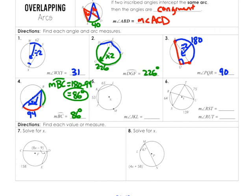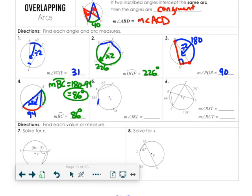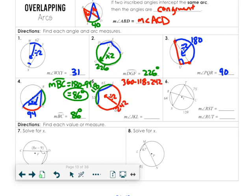Number 5: they're asking for angle JKL. That angle cuts off this arc. I need to figure out that arc, then divide by 2. I add the two given arcs: 53 and 65 together make 118. The red arc is 360 minus 118, which is 242. Then 242 divided by 2 gives the answer: 121 degrees.